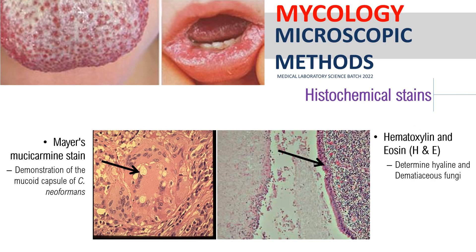The next stain is Mayer's Mucicarmine or Mayer's Mucin stain. This stain is used for the demonstration of the mucoid capsule of Cryptococcus neoformans. In the picture, you can observe the capsule of Cryptococcus neoformans.